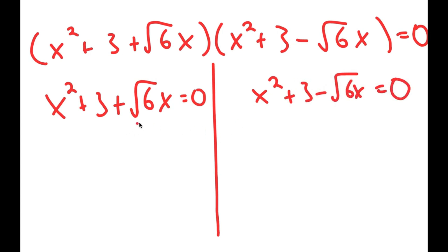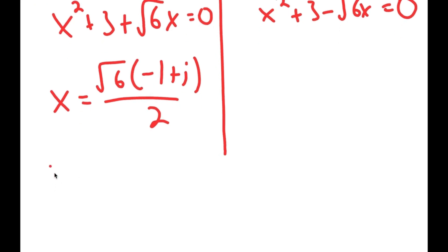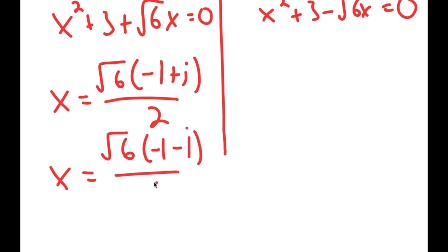For both of these, because they are quadratic equations, you can use the quadratic formula to solve them. I'm not going to do that in the video, but you can try that yourself. You should get that x is equal to √6 times (−1 + i) over 2 and x is also equal to √6 times (−1 − i) over 2.